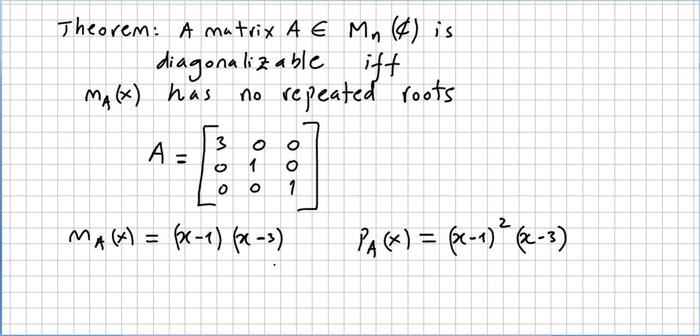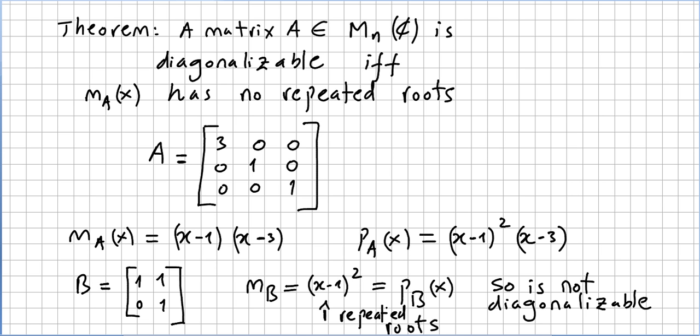Let me pick another example. This one, for instance, B: [1, 1; 0, 1]. So this is x minus 1, x minus 1, right? So the minimal polynomial is (x-1)^2, and so is the characteristic polynomial. We have repeated roots. So the minimal polynomial has repeated roots, so it is not diagonalizable.